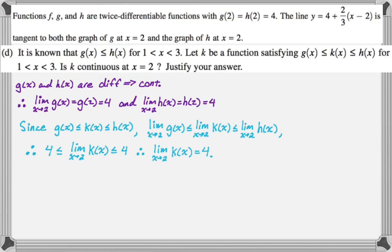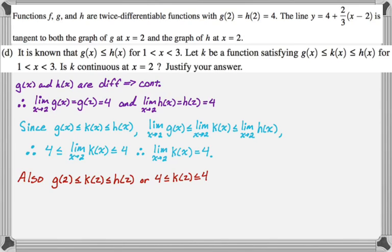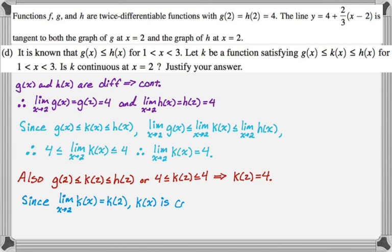From the original inequality at x equals two, we also know four equals g of two is less than or equal to k of two is less than or equal to h of two equals four, so k of two must equal four. Since the limit as x approaches two of k of x equals four equals k of two, k of x is continuous at x equals two by definition of continuity. That's all of problem number six.